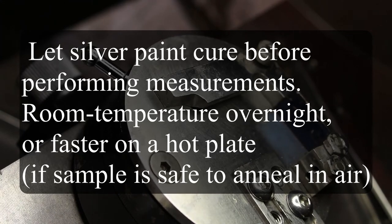At this point, typically, you'll want to let the silver paint dry overnight before you measure the sample. You can start measuring now, but its resistance is not going to be reliable until it's completely cured. So your options are you can put it on a hot plate and heat it if your sample can take that. But if you don't want to anneal it, then just letting it sit at room temperature overnight is fine. I like to put it in a case or something so it doesn't get dirty.